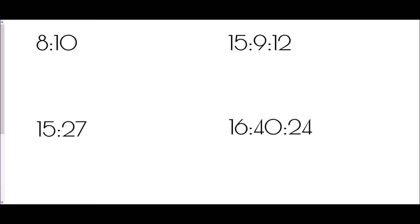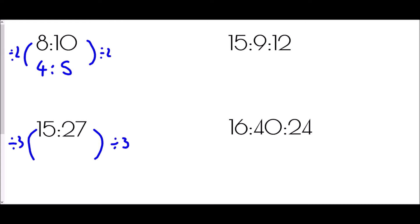Let's try a few examples. We've got the ratio 8 to 10 — how could I simplify that? The common factor of 8 and 10 is 2, so I divide 8 by 2 to get 4, and 10 by 2 to get 5. So 8 to 10 is the same as the ratio 4 to 5. For 15 to 27, the highest common factor is 3, so I divide both sides by 3: 15 divided by 3 is 5, and 27 divided by 3 is 9. We've simplified the ratio.